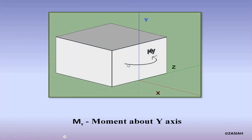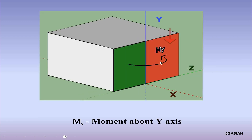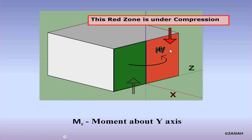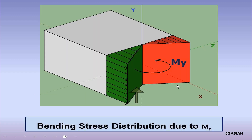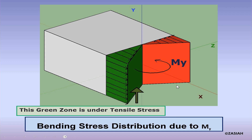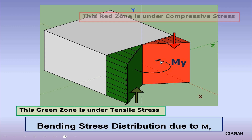Here a moment is applied on the object about the y-axis, that is moment My. Due to this moment My, the right zone marked in red is under compression and the left green zone is under tension. The bending stress distribution due to moment My shows that the stress is zero at the neutral axis, that is the y-axis, and the stress increases linearly from the neutral axis to either the right or left edge of the plane.